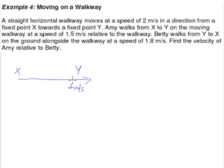So let this be the walkway. Now Amy walks from X to Y on the moving walkway at a speed of 1.5 meters per second. So here you go, at this point we have Amy. She looks like she's in some kind of hurry. So she's moving at a speed of 1.5 meters per second on the walkway which is moving at a speed of 2 meters per second. So far this is the story.